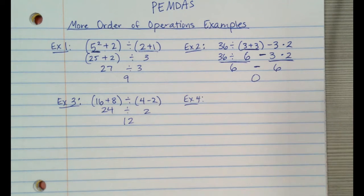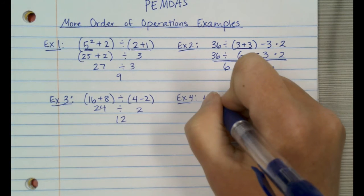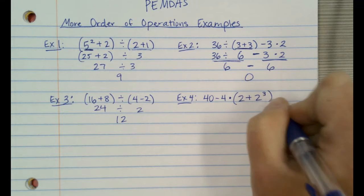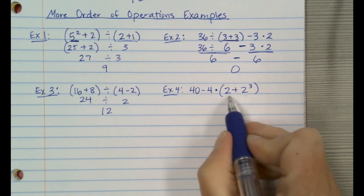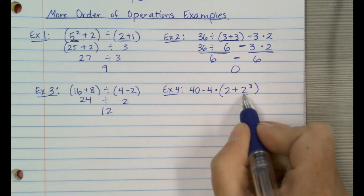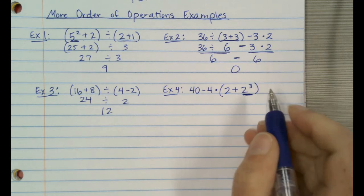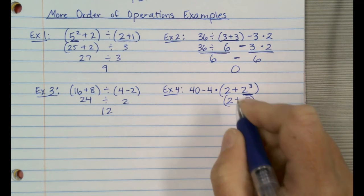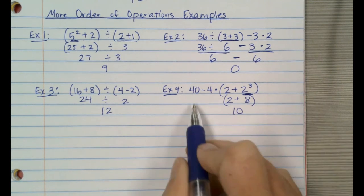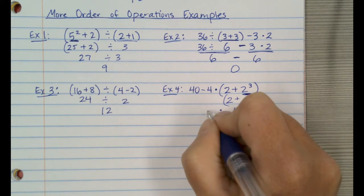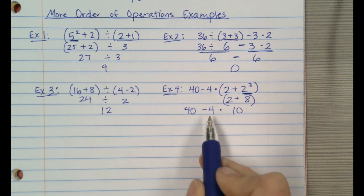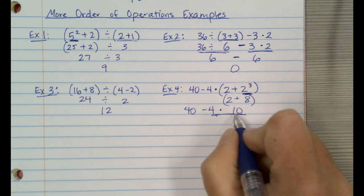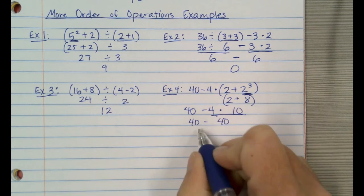Example 4: 40 − 4 × (2 + 2³). First we look at what's inside our parentheses. We have addition and an exponent — exponents come before addition. So 2 to the third power is 8. Then 2 plus 8 gives me 10. Bringing everything else down: 40 − 4 × 10. Now I have subtraction and multiplication — multiplication is first. 4 times 10 is 40, and then 40 minus 40 gives you 0.